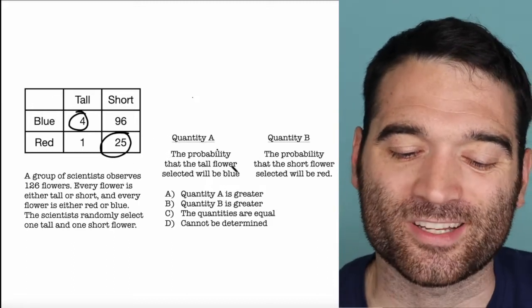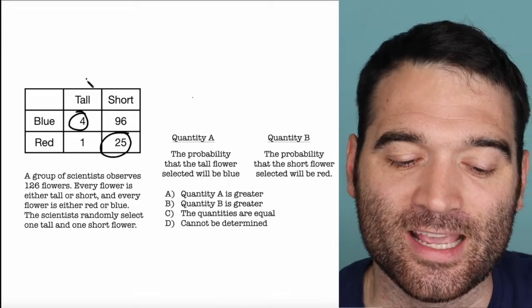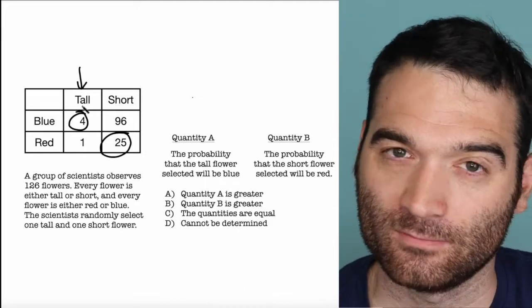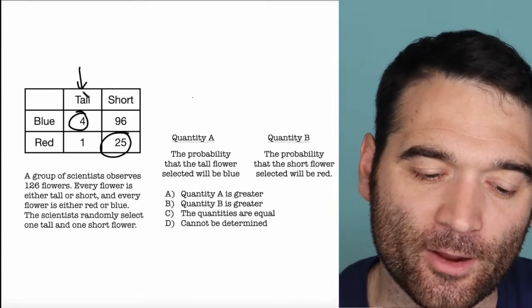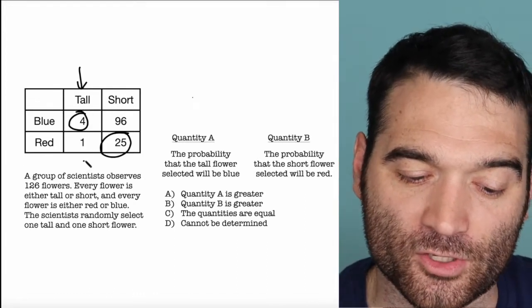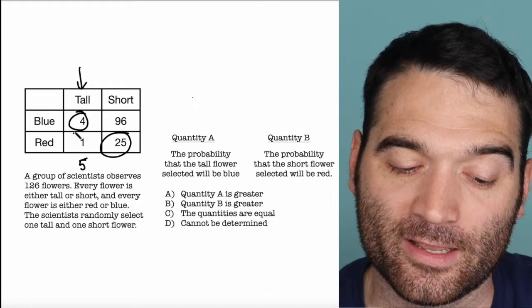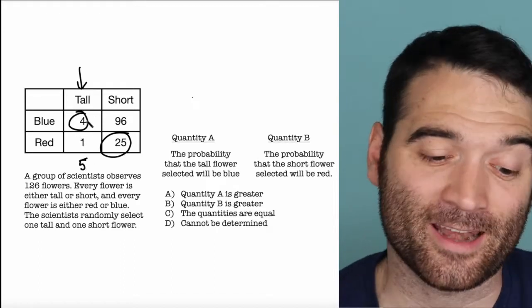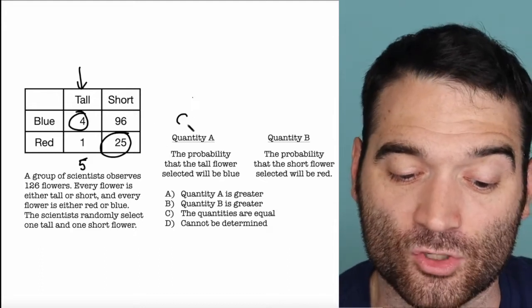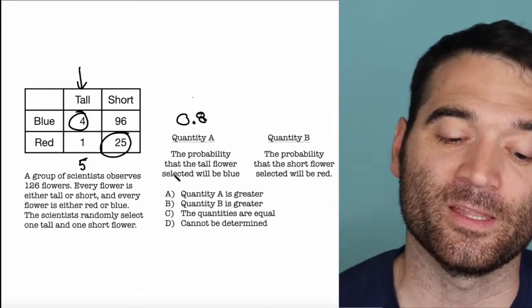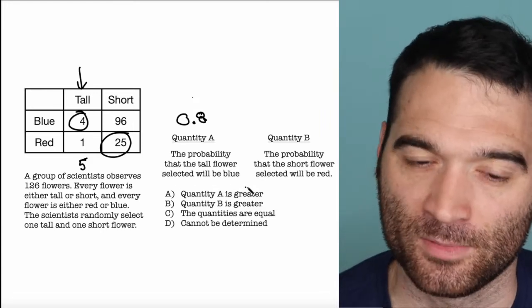What these quantities are saying, what the question is asking is, if I pick a tall flower, what's the probability that that tall flower is going to be blue? Well, how many tall flowers are there overall? There's four plus one, so five overall, right? And the probability that I'm going to pick a blue one is going to be four out of five, because there are four of them. So 0.8. The probability that the tall flower selected will be blue is going to be 0.8.